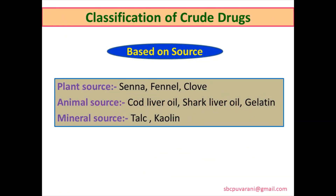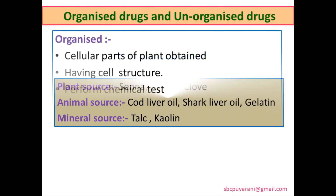Crude drugs are classified according to their sources. Plant source: senna, fennel, clove. Animal source: cod liver oil, shark liver oil, and gelatin. Mineral source: talc, kaolin, bentonite.